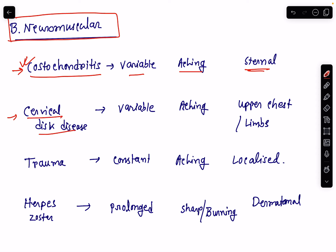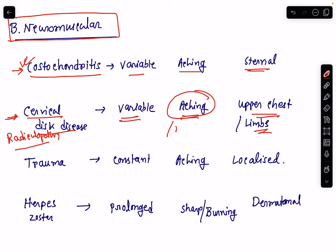Next is cervical disc disease or cervical radiculopathy. The duration is usually variable. There will be aching type of pain and the location is in the upper chest or the limbs. The nature may be aching or sometimes there may be a feeling of numbness in the upper limb.